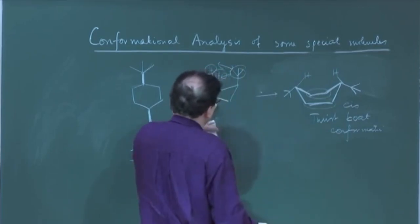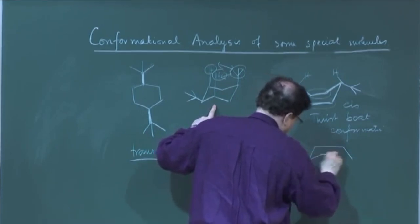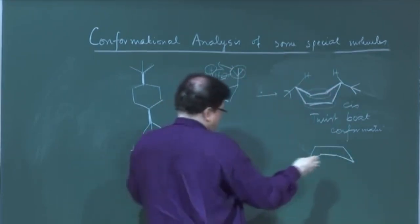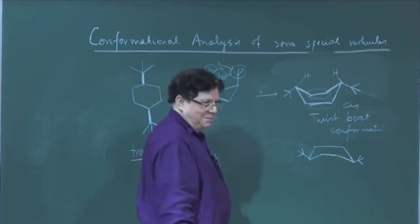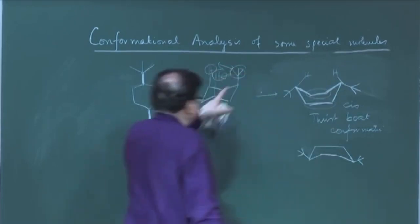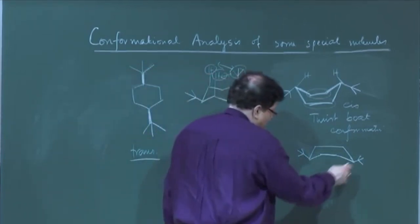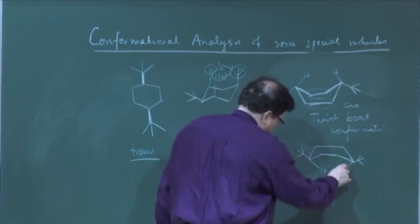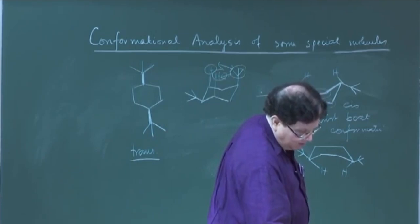If you want to correctly draw this — in order to make the beta orientation, and since both tert-butyl groups are actually beta — this molecule has a plane of symmetry passing through the 1 and 4 carbon atoms. So it does not matter whether you write it one way or the other. Remember these two tert-butyl groups occupy the equatorial positions, leaving the flagpole hydrogens intact. So this is a molecule where the twist-boat form is the favoured one.